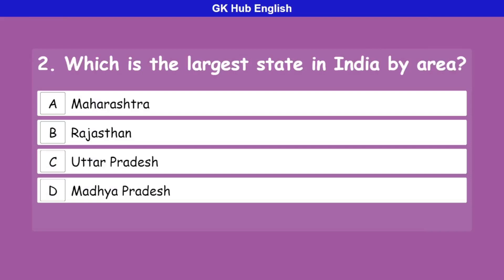Question 2: Which is the largest state in India by area? Option A is Maharashtra, option B is Rajasthan, option C is Uttar Pradesh, option D is Madhya Pradesh. Correct answer is Rajasthan.